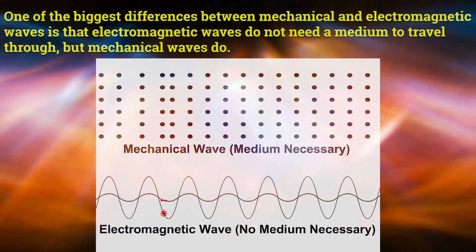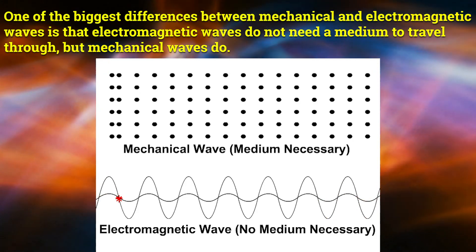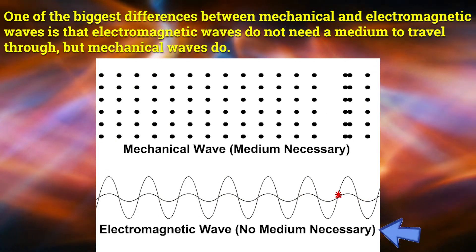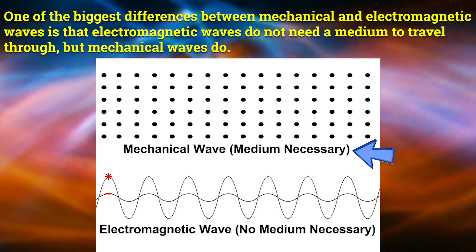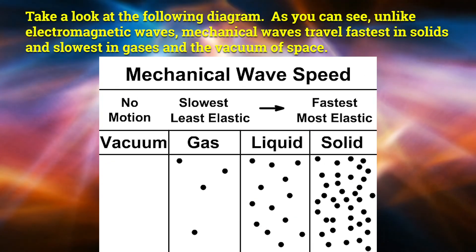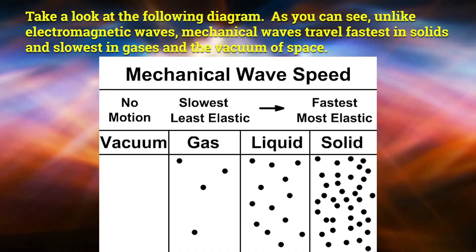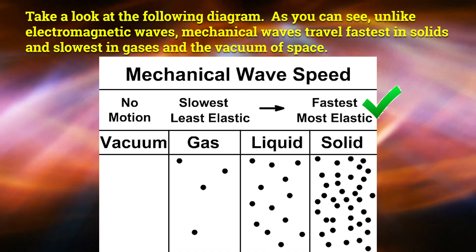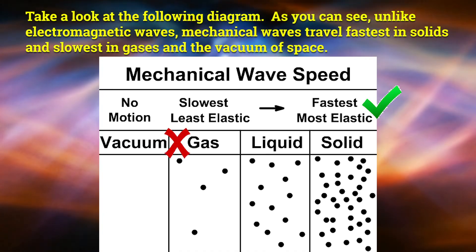Now let's focus on mechanical waves. One of our biggest differences between mechanical and electromagnetic waves is that electromagnetic waves do not need a medium to travel through, but mechanical waves do. Take a look at the following diagram. As you can see, unlike electromagnetic waves, mechanical waves travel fastest in solids and slowest in gases and the vacuum of space.